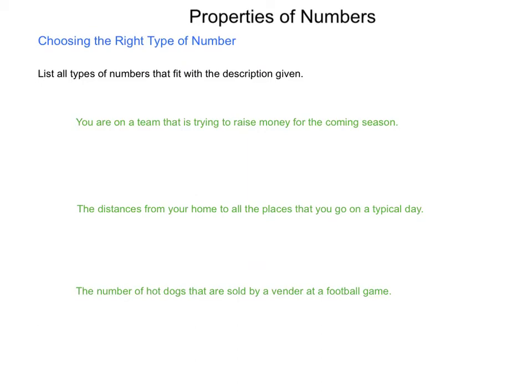You're on a team that is trying to raise money for the coming season. The money that you raise, what types of numbers could that entail? Could it be natural numbers? Yes. The natural numbers are normally symbolized by an N with a double crossbar. Could we use the whole numbers? Yes, we could. We could raise no money at all. The whole numbers do not have a special symbol. Could we have integers? Well, integers is not really a possibility because you're not going to raise a negative amount. However, we do have the natural numbers which are part of the integers, so we will include it. The integers do have a special symbol. It is a Z with a double crossbar.